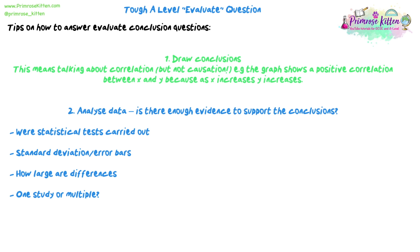So the first thing you need to do is draw some conclusions — that means looking at the data yourself and figuring out what it is telling you: what is the trend, what patterns can you see. We're talking about correlation here, not causation, because we're never going to be able to definitely link causation. Even if a statistical test has been done, you're still saying it's likely, so I would always caution against talking about causation in your answer.